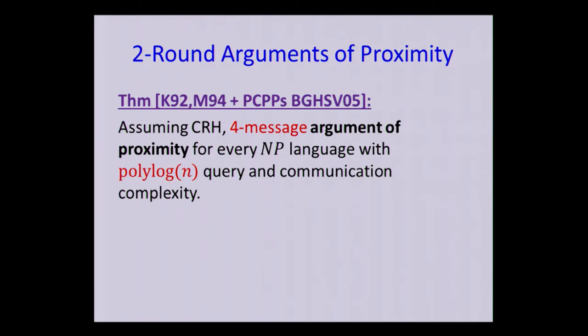And it turns out that if you replace the PCP in the Kilian and Micali construction with a PCP of proximity, that already gives you a sound protocol. So what you would get is the following theorem. You get... It's based on collision-resistant hashing. And what you get is a four-message argument of proximity for every language which is an NP where the query, the communication complexity, and the verifier's running time are all polylogarithmic. And also the prover is going to be efficient as long as it gets the NP-witness.